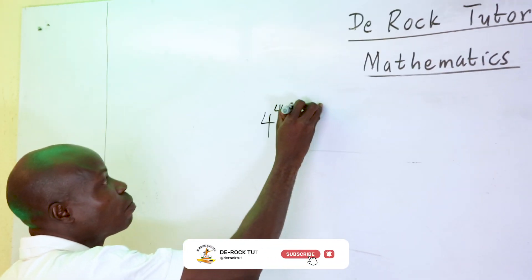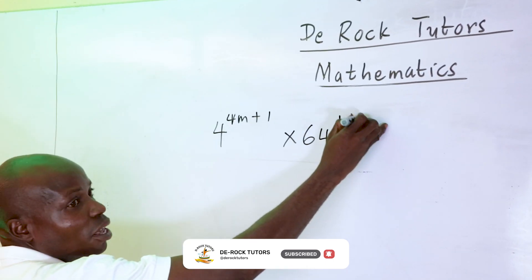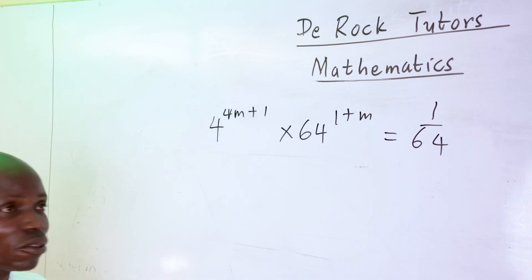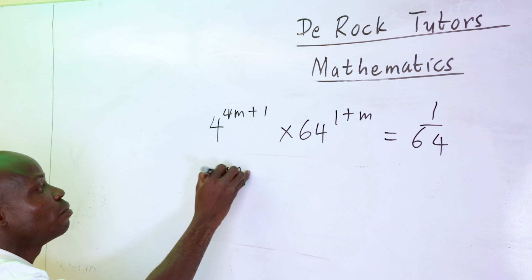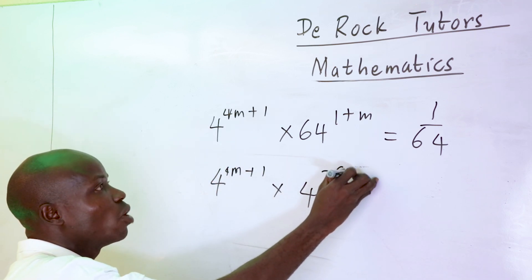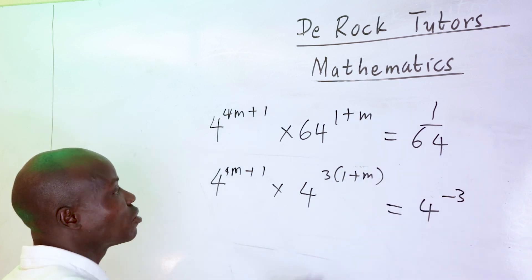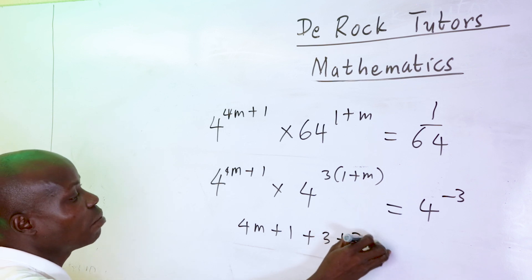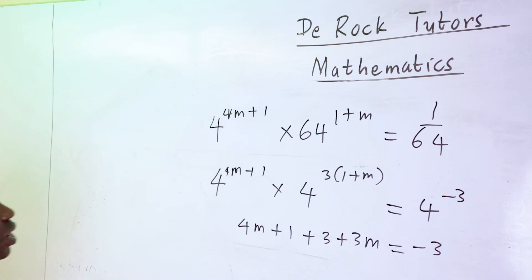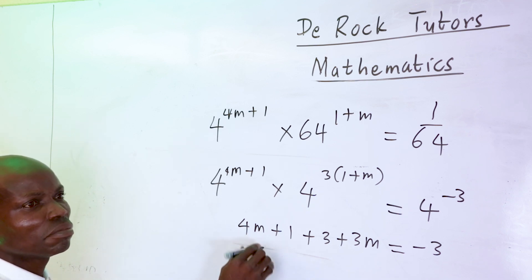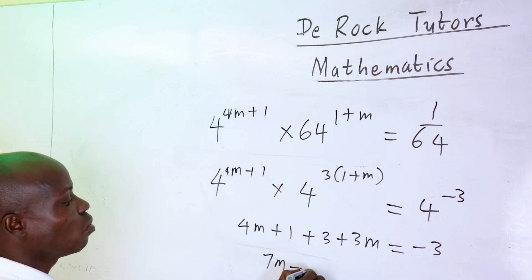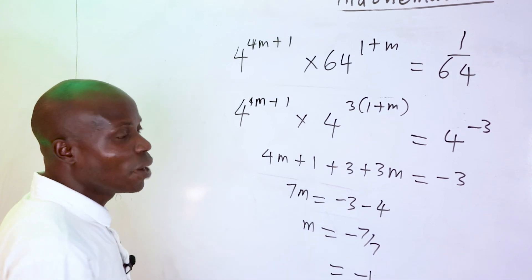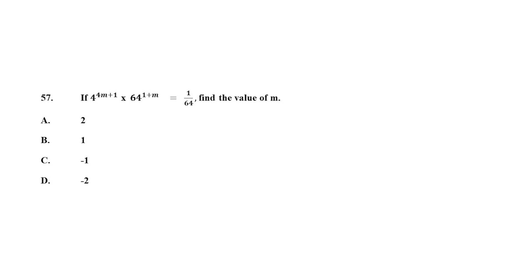Number 57: if 4 to the power (4M plus 1) multiplied by 64 to the power (1 plus M) equals 1 over 64, find M. Since 64 is 4 raised to the power 3, we get 4 raised to (4M plus 1) multiplied by 4 raised to (3 times 1 plus M) equals 4 to the power minus 3. Applying the law of indices: 4M plus 1 plus 3 plus 3M equals minus 3, so 7M equals minus 7, giving M equals minus 1. The correct option is C.